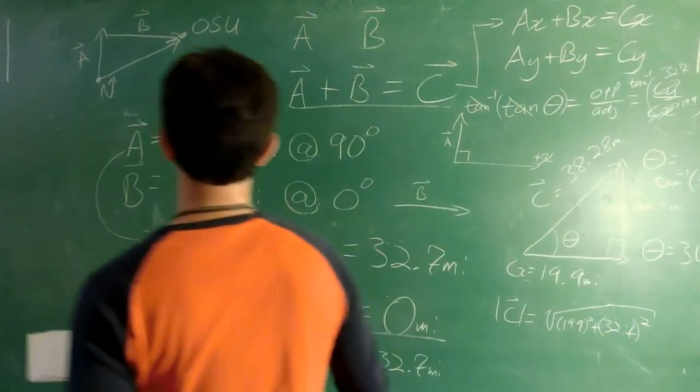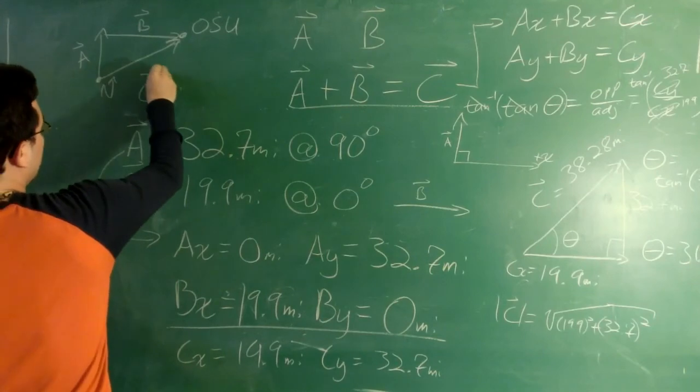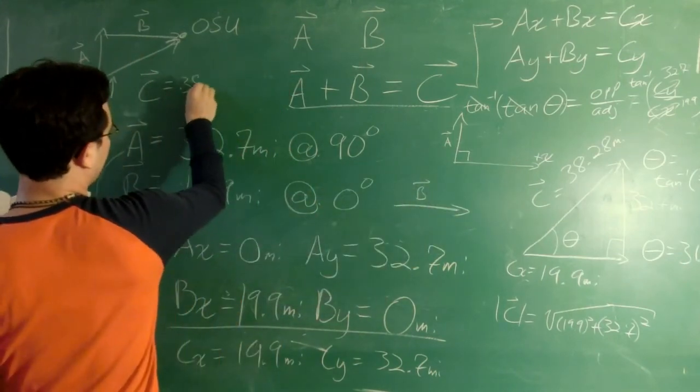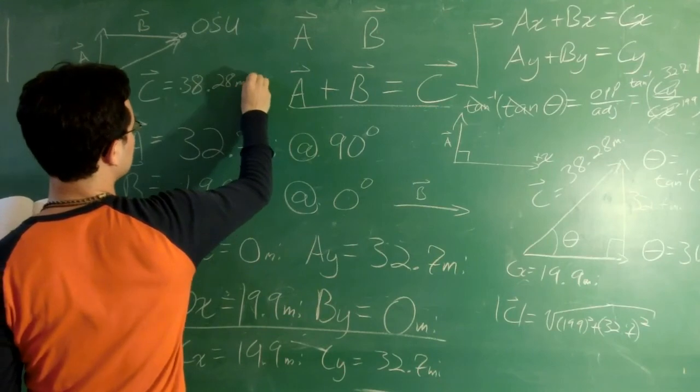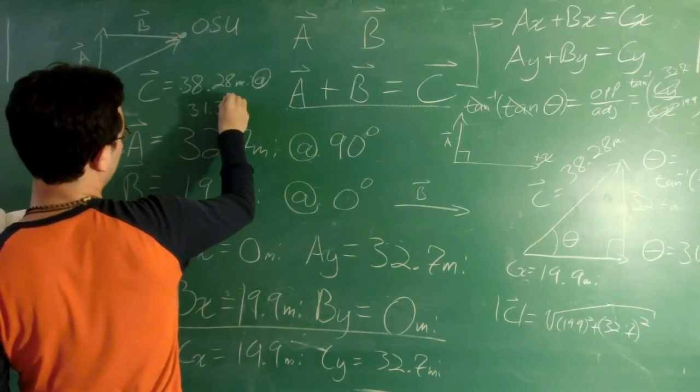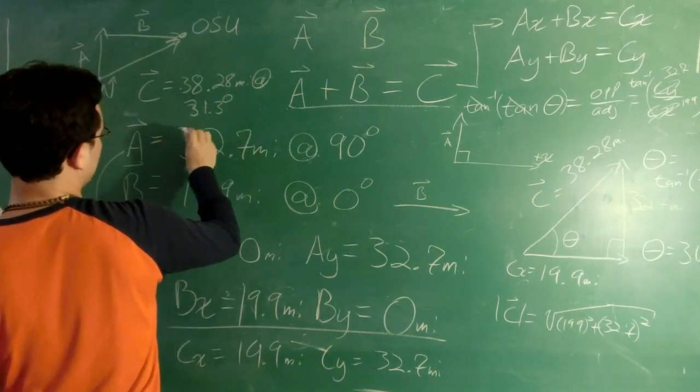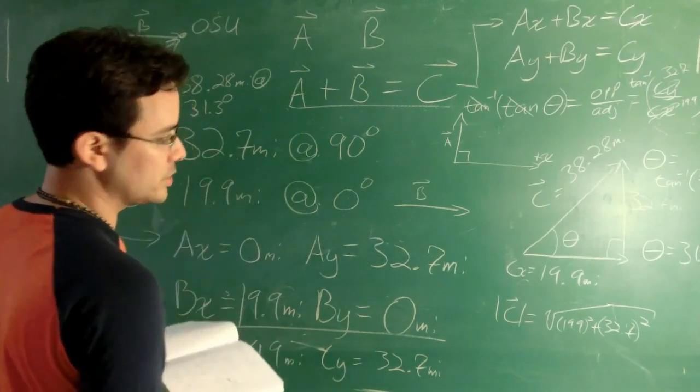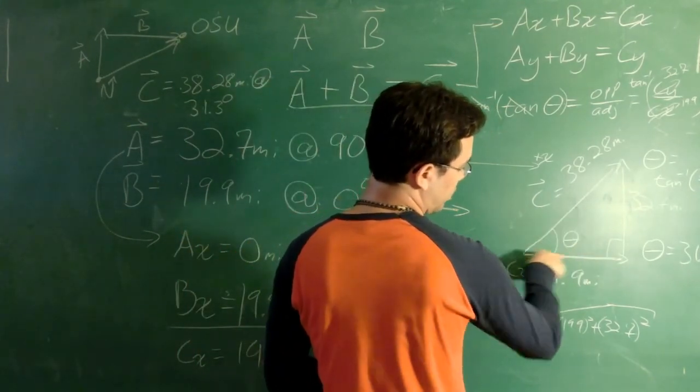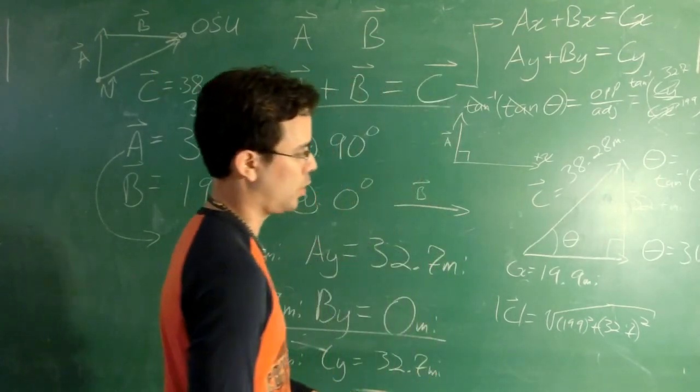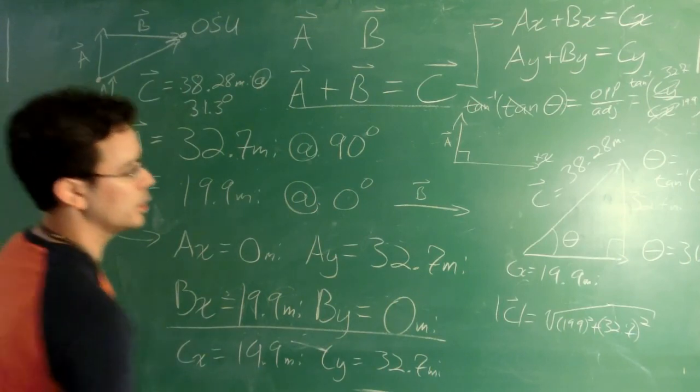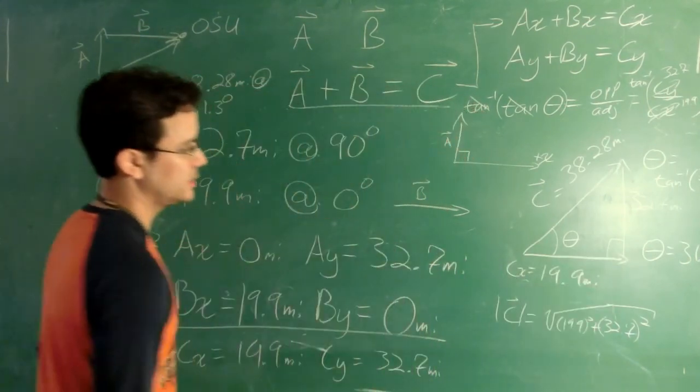So my final answer, and I'm going to write it right up here, since that's where I have room, is C is equal to my total length, my magnitude, 38.28 miles at an angle of 31.3 degrees. And that's with respect to our x-axis. I could also, since this is from a map, I could say that this is 31 degrees north of east. So we pointed east, and we turn 31.3 degrees north. And that's our angle. But for now, I'm trying to give this as a more general one. So we're going to have it with respect to our positive x-axis. And that's what we've got.